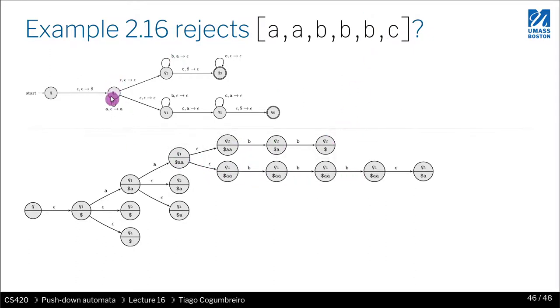Next we go this way. First we read the two As. We move here and then we read as many Bs as we want. So let's do that. And eventually we get here.